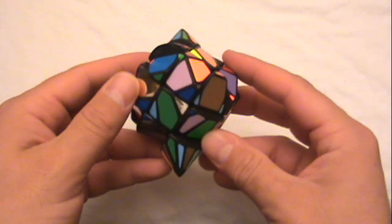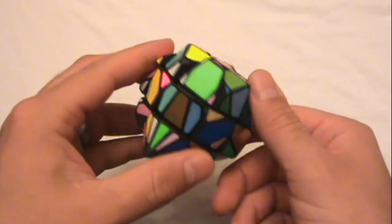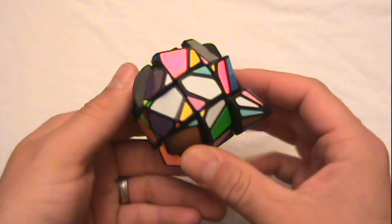So as you can tell with just a normal checkerboard pattern, it certainly makes it very confusing with 24 different sides and 24 different colors.